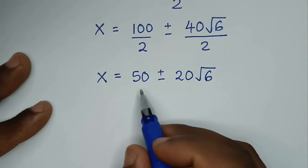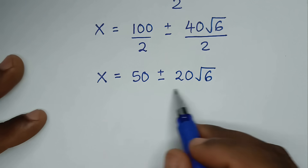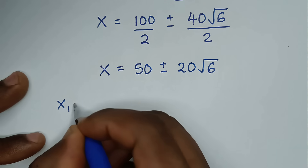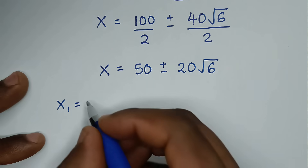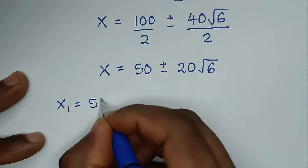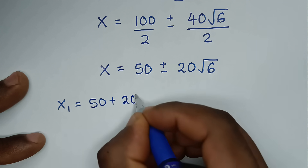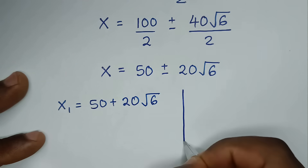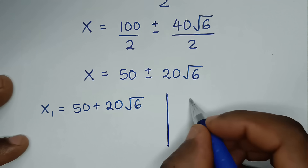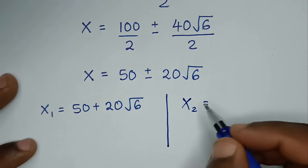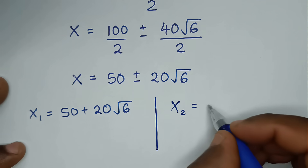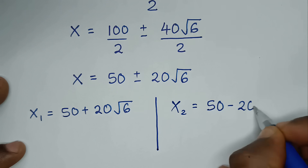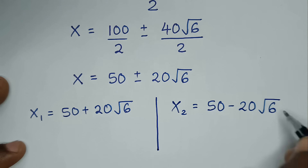We have two solutions of x. The first value x1 is equal to 50 plus 20 square root of 6, and the second value x2 is equal to 50 minus 20 square root of 6.